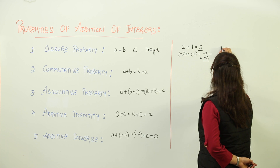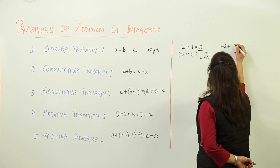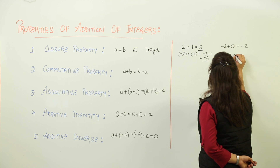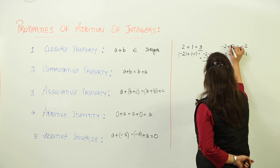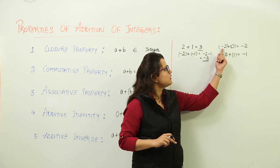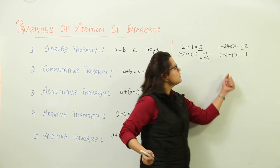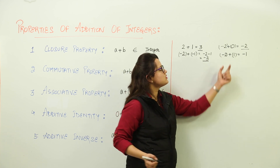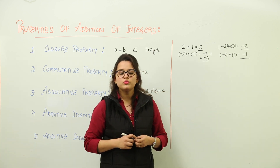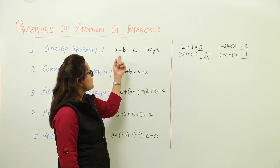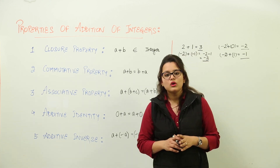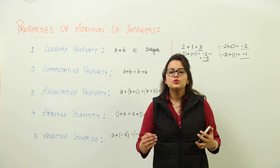We can have different examples. Let's say minus 2 plus 0, you would get minus 2. If you add minus 2 plus 1, you would get minus 1. Here I have added a negative integer with 0 and got a negative integer. I added a negative integer with a positive integer and got a negative integer. So the closure property is satisfied for all cases — no matter which type of integers you are adding, you are always going to get an integer.